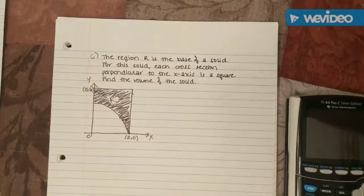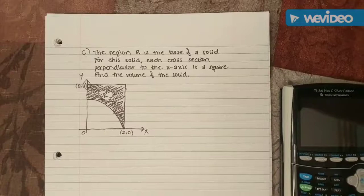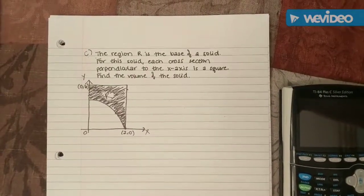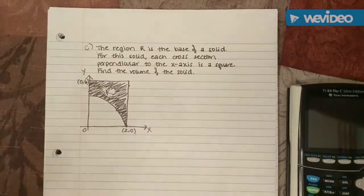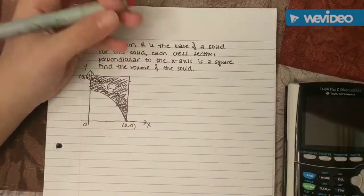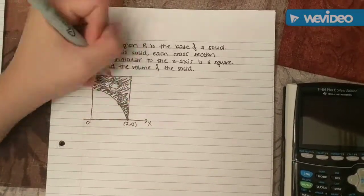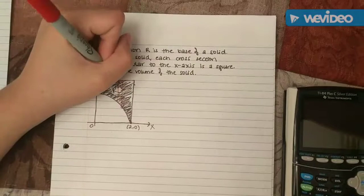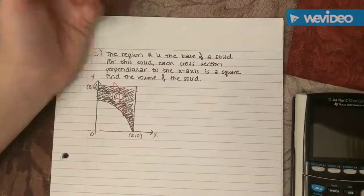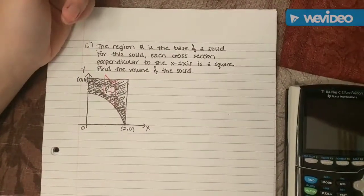For part C, the region R is the base of a solid. For this solid, each cross-section perpendicular to the x-axis is a square. Find the volume of the solid. What you're going to want to do first is kind of draw a visual of what the problem is saying. The cross-section is going to look something like this, and then you have the 3D of it.